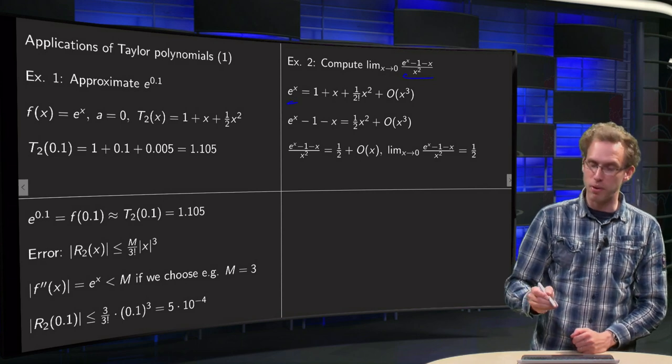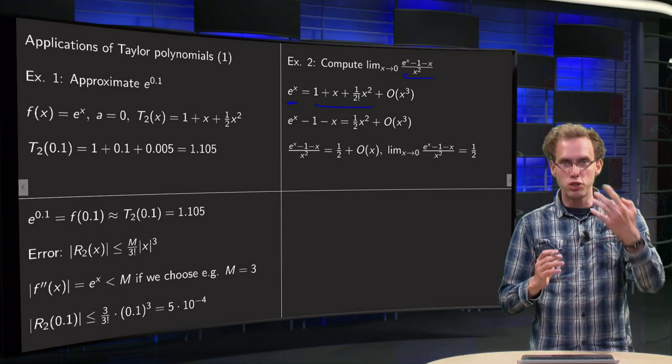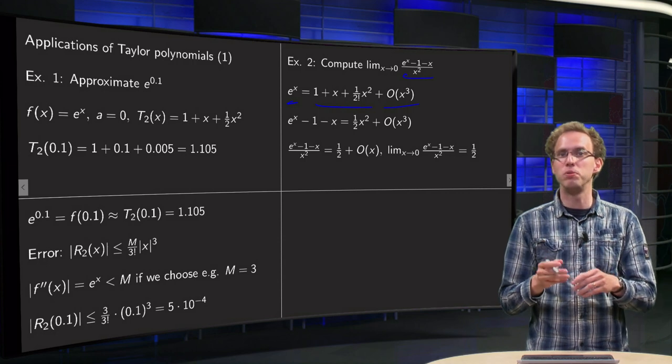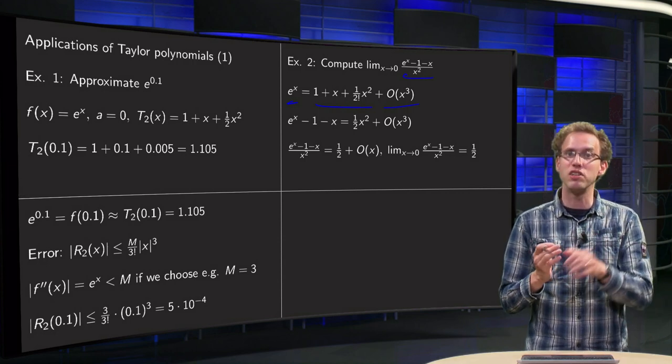We say e to the power x equals 1 plus x plus 1 half x squared, plus terms x cubed, x to the power 4, x to the power 5, and for that we use this symbol O of x cubed. And this means, well, we have terms of higher order in x starting with x cubed.